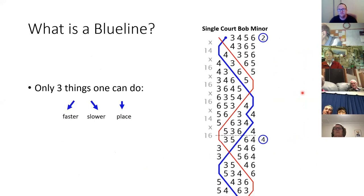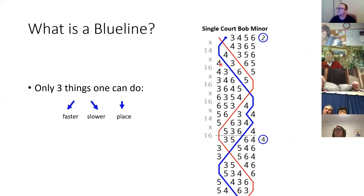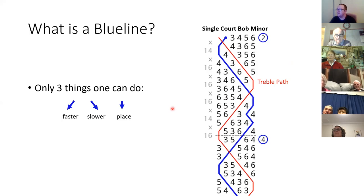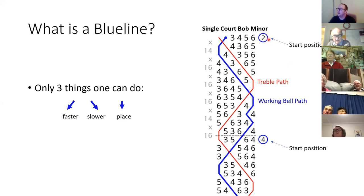Typically when a blue line is generated you can either write it down yourself, but there are a few websites — I'll give you links in a bit. When you generate it from a website you'll get something that looks like this: you have the red line which gives you the treble's path, the blue line which gives the working bell's path, and a start position — any number in a circle generally shows where that bell starts. You can see the two starts here and the four starts at the second start position.